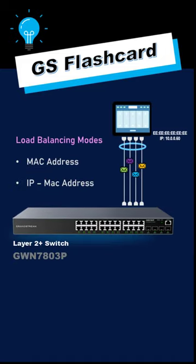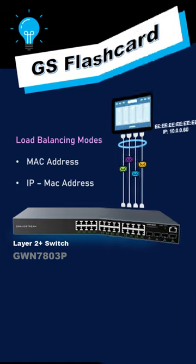When a link aggregation group is created to increase bandwidth and availability, you can set up load balancing across the active member interfaces to be based on MAC address or IP MAC address.